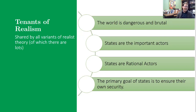Realists also tend to view states as rational actors. They generally think states are going to engage in actions that are on balance good for the state — they're doing a cost-benefit calculation. And the primary goal of states, what's motivating those rational calculations, is that states want to survive. That's the core mission, the core goal of a state, and it will do what it has to do to achieve that end.